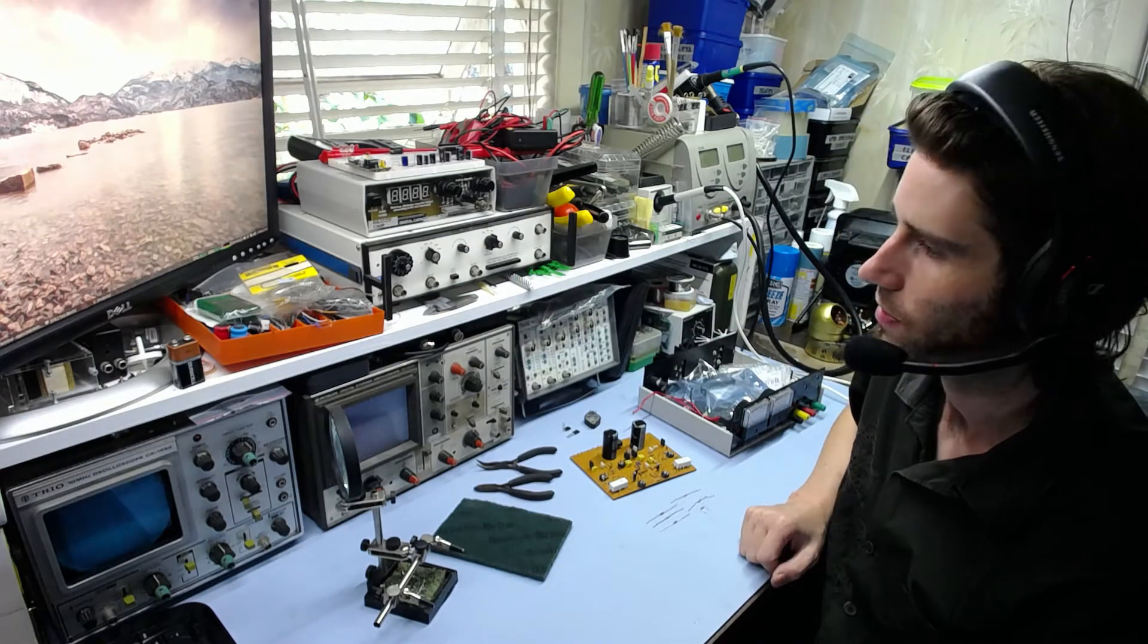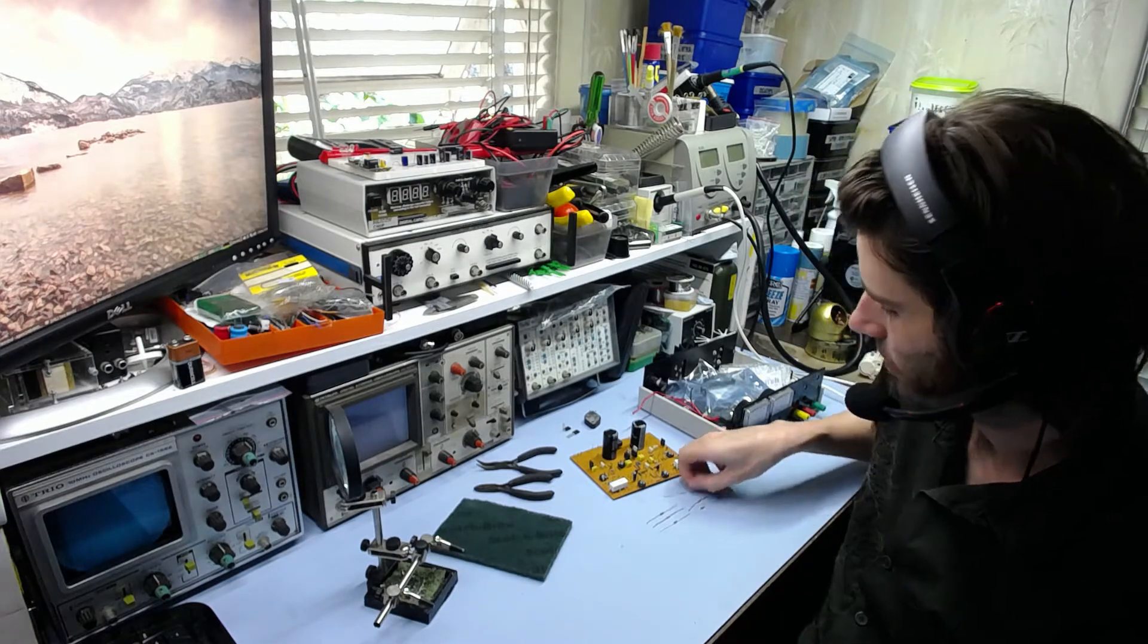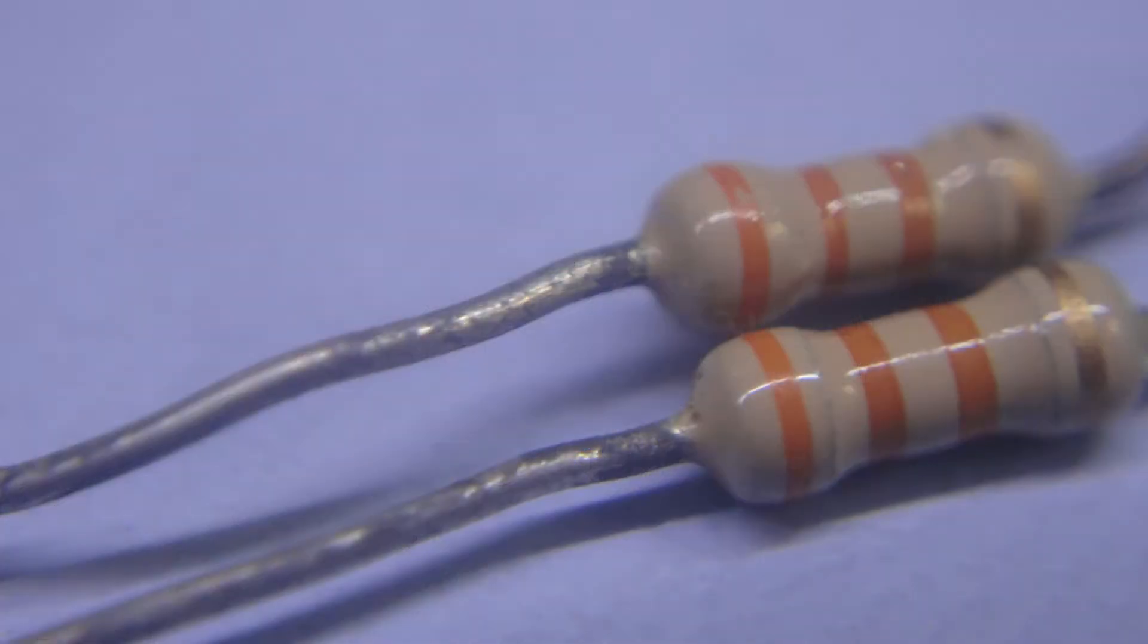And of course the only problem is with those is that some of them have got tarnished leads and are a bit crusty, especially these ones, these 33k ohm resistors. These ones are quite crusty, these ones are pretty oxidised, not just tarnished, they're actually oxidised, a bit pitted, they're not that great.